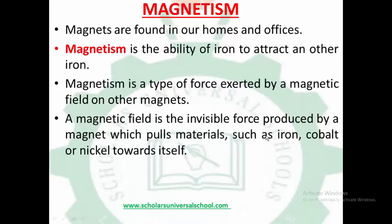Our topic for today is Magnetism. Now let us know about magnets. Magnets are found in our homes, offices, and schools — they can be found in most places. Magnetism is the ability of iron to attract another iron. It is a type of force exerted by a magnetic field on other magnets. A magnetic field is the invisible force produced by a magnet which pulls materials such as iron, cobalt, or nickel towards itself.